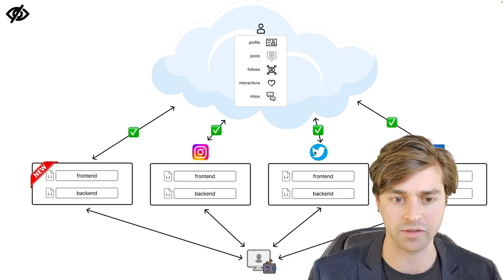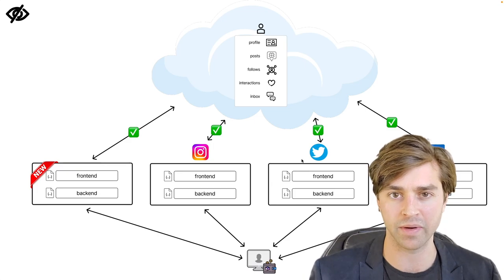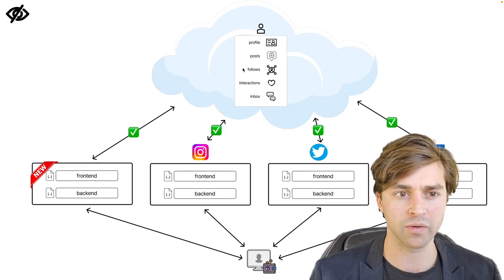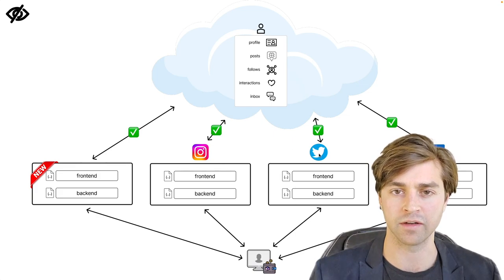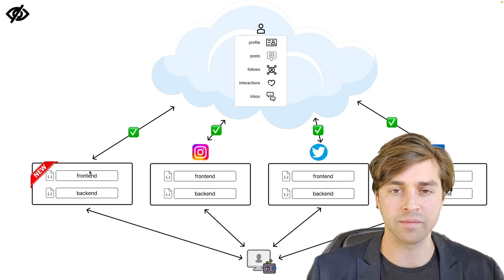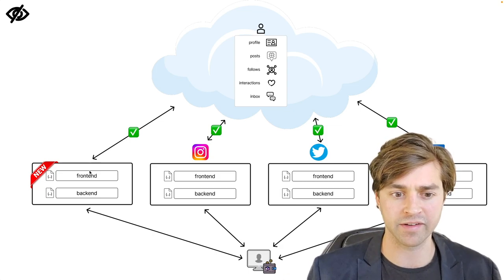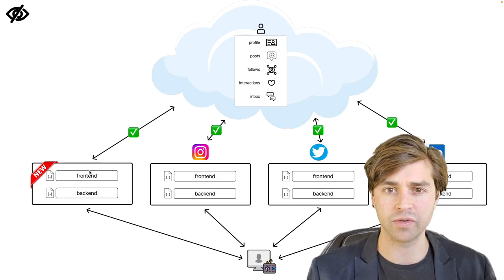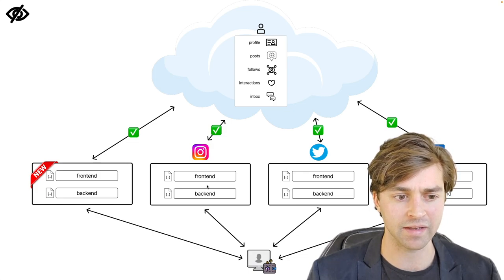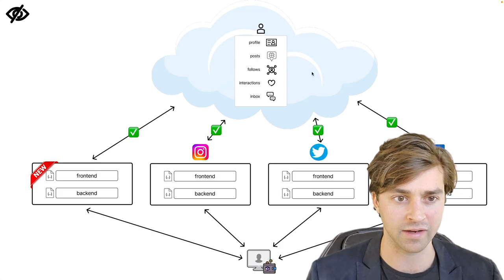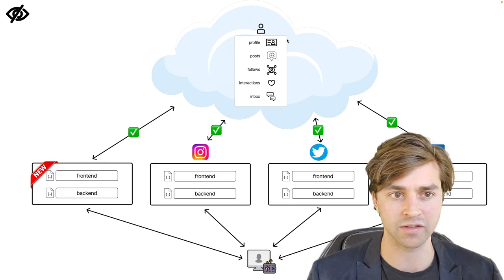Another major benefit of storing data in a personal data store is that all applications can now have access to it. So if I'm on Instagram and I want to sign up to Twitter, it can reuse my profile from Instagram, pull in my bio and profile picture, and most importantly, pull in my followers and those who I'm following from Instagram. So I don't have to start from scratch on Twitter. This lowers switching costs. Also, if a more attractive product comes along — maybe better UI, better spam prevention, better content algorithms — it's now very possible for a developer team to compete with these other applications because you're not competing against a network effect of 2 billion users.